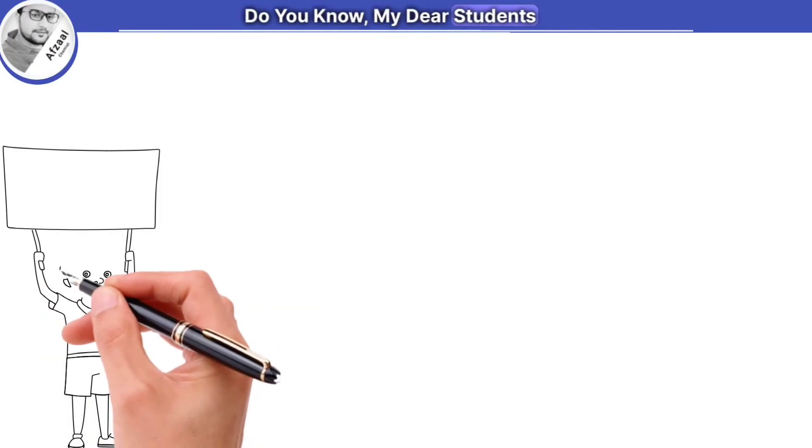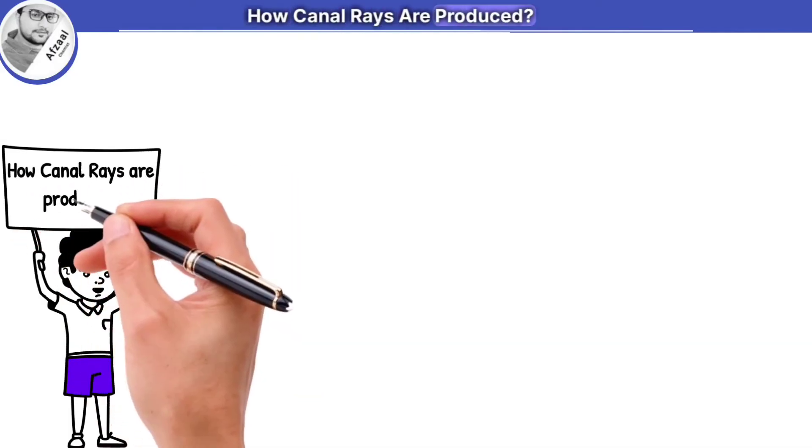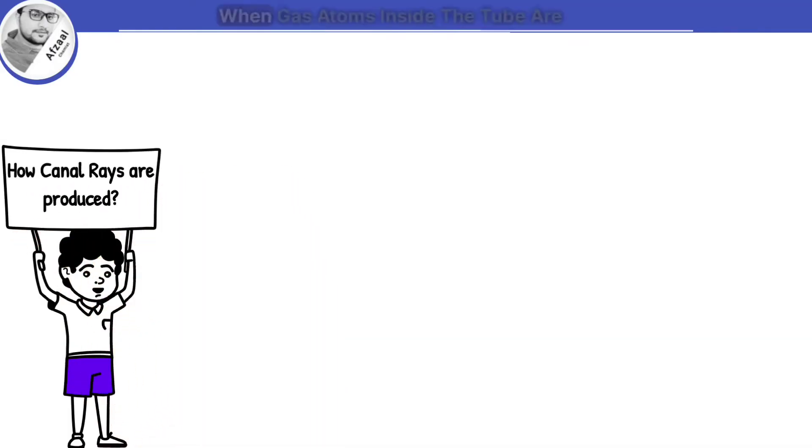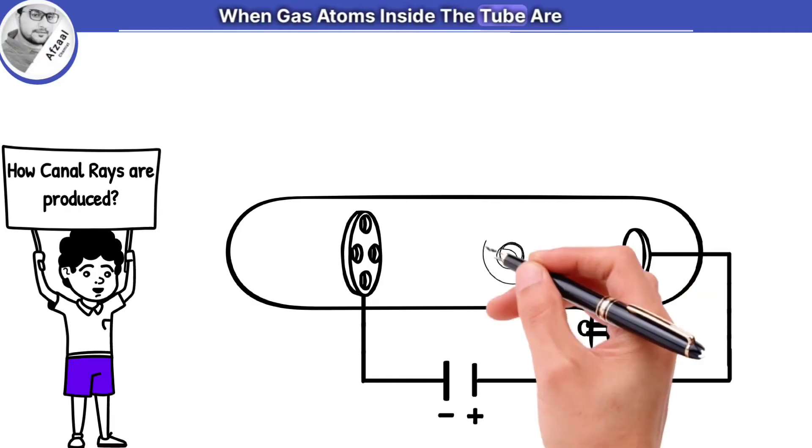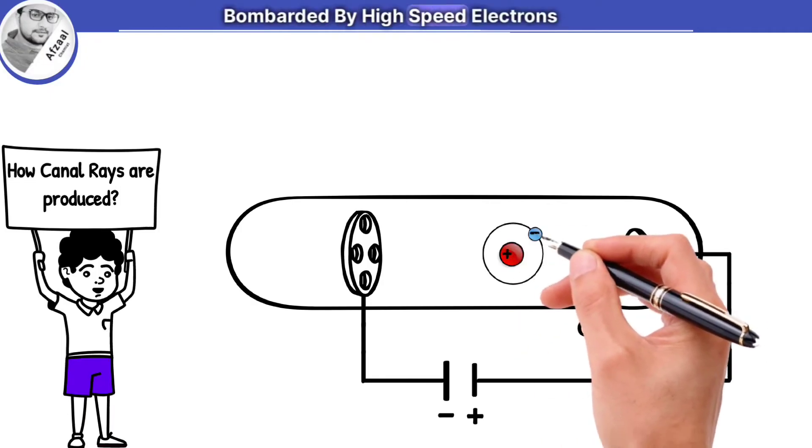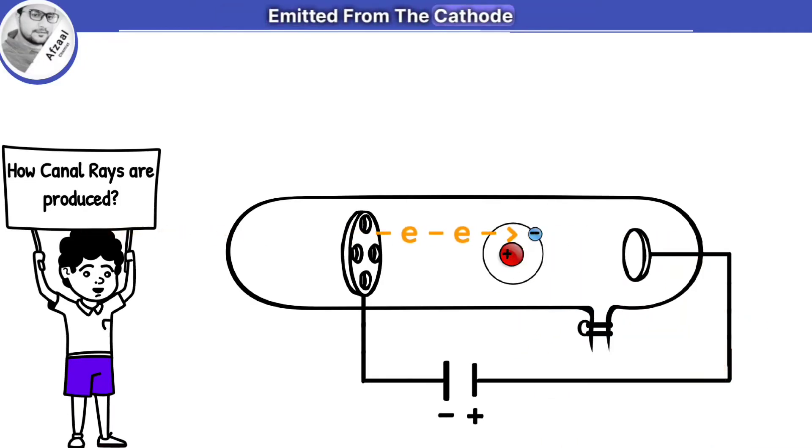Do you know my dear students, how canal rays are produced? Let me explain. When gas atoms inside the tube are bombarded by high-speed electrons emitted from the cathode, these electrons collide with atoms of gas and knock off electrons from the gas atoms, creating positively charged particles. These particles then move towards the anode and produce a beautiful glow when they hit the walls of the discharge tube.